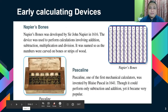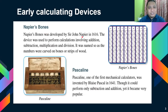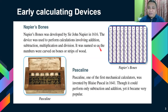We also have early calculating devices such as Napier's Bones. It was developed by Sir John Napier in 1616. The device was used to perform calculations involving addition, subtraction, multiplication, and division. It was named so as the numbers were carved on bones or strips of wood.